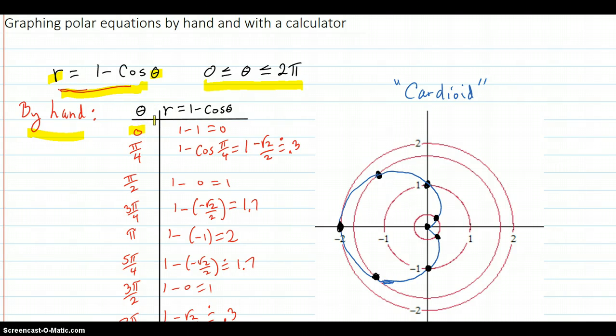Zero angle, so cosine of zero is one. One minus one is zero. So that's your first point right there. Zero, zero angle out zero. So really you're facing in this direction with your angle, but you went out zero, so you ended up right there.